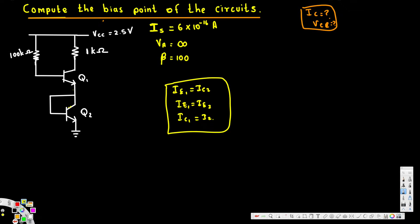Since we want to find IC and VCE, we apply the loop equation. Because we have two transistors, the base-emitter voltage appears twice. Applying the formula: VCC minus IB times RB (base resistance = 100kΩ) equals 2*VBE. From this we can solve for the base current IB, or directly for IC.